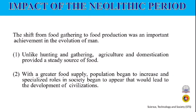The shift from food gathering to food production was an important achievement in the evolution of man. Unlike hunting and gathering, agriculture and domestication provided a steady source of food. With a greater food supply, population began to increase and specialized roles in society began to appear, which would lead to the development of civilizations.